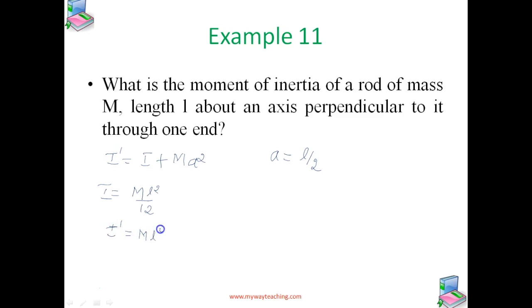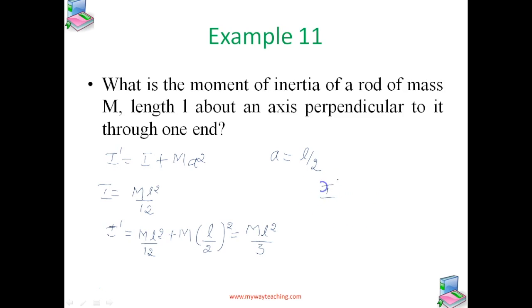So applying the parallel axis theorem: I' = ML²/12 + M(L/2)² = ML²/12 + ML²/4 = ML²/3. We can verify this independently: since the rod is half of a rod of mass 2M and length 2L, I' = (2M)(4L²)/12 × (1/2) = ML²/3. So the moment of inertia of the rod about an axis through one end is ML²/3.